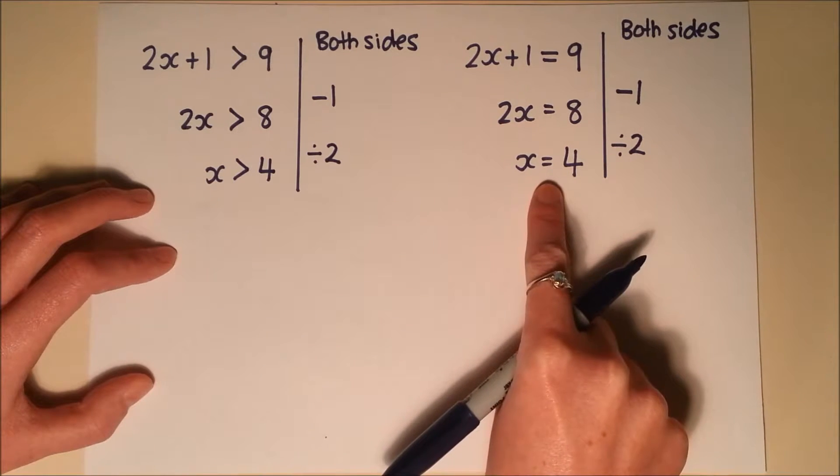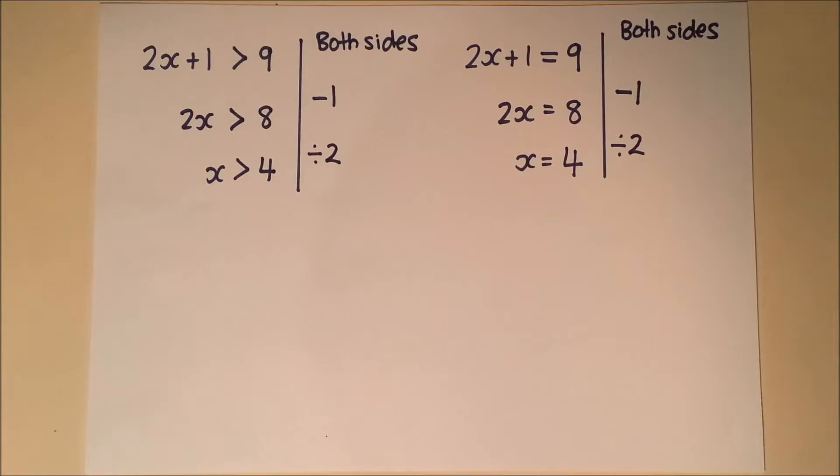So the only difference is the symbol that's in the middle. It's really important that you keep the same symbol all the way through though. So remember that you are solving an inequality and not an equation. So you can see with 2x plus 1 is greater than 9, I've left a greater than symbol all the way through. And you must check that really carefully.